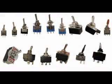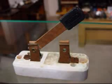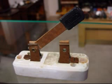Toggle switches are actuated by a lever angled in one of two or more positions. The common light switch used in household wiring is an example of a toggle switch. Because the contacts are enclosed inside a toggle switch, they are safer than a knife switch, especially for high voltage circuits, because they protect the person operating the switch from making contact with the electricity.